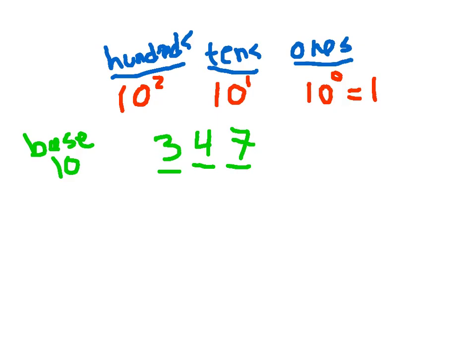So here in this particular column here, 7, this represents 7 times 1. We have seven 1s. This 4 represents 4 times, well, it's not 10 to the 1st power, or excuse me, not 10 to the 0 power, it's 10 to the 1st power. And this 3 represents 3 times 10 squared. Each one of these particular numbers here represents, in this case, 7 ones, 4 tens, 3 hundreds. We're going up by a power of 10.